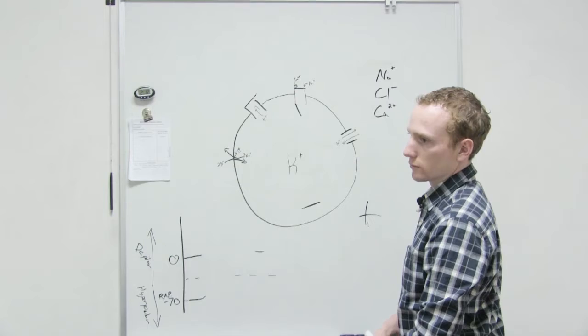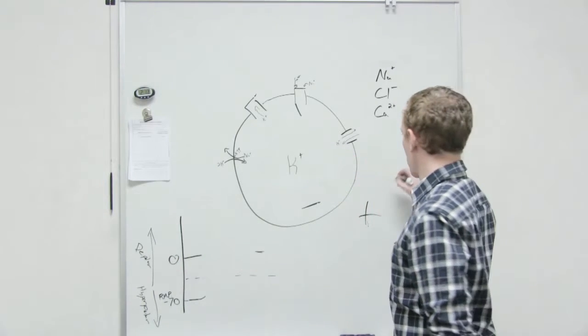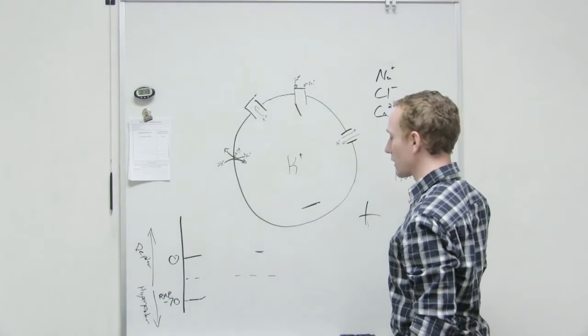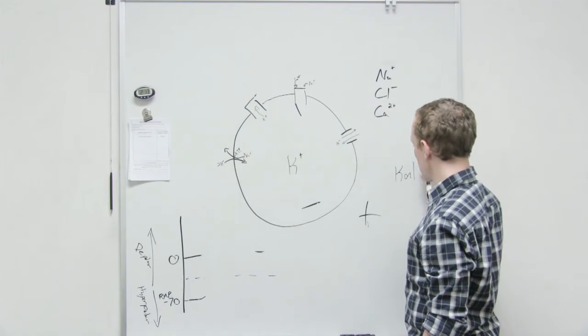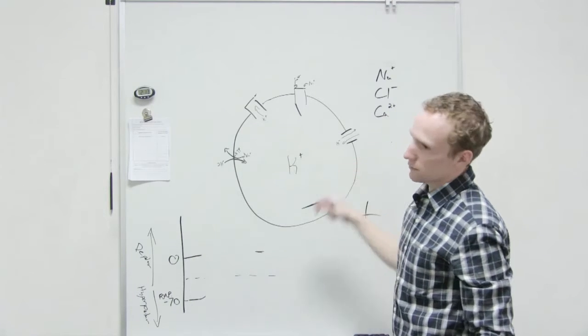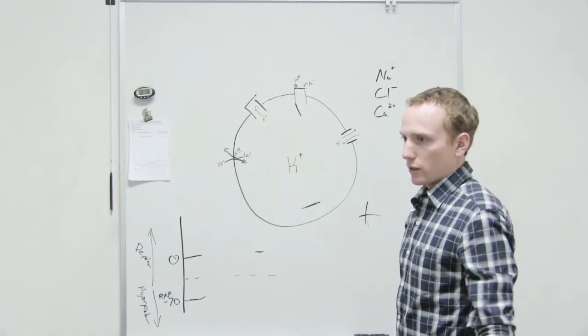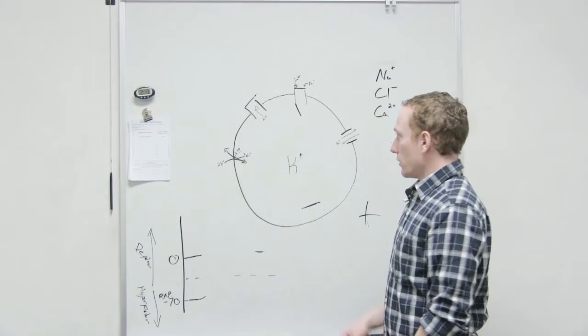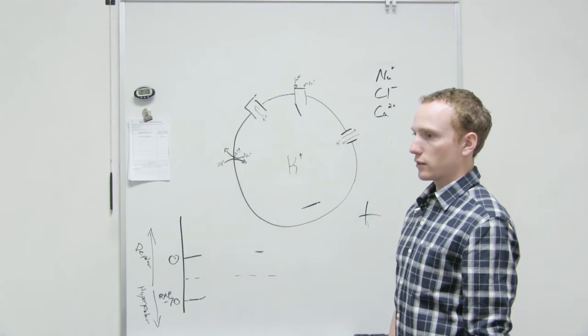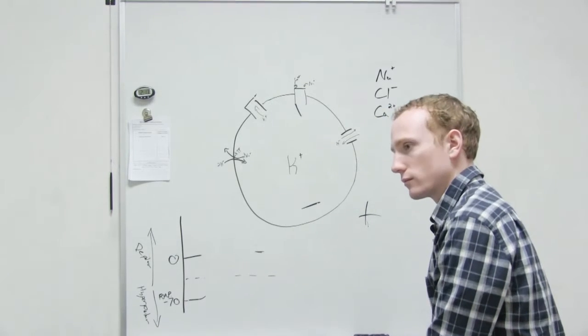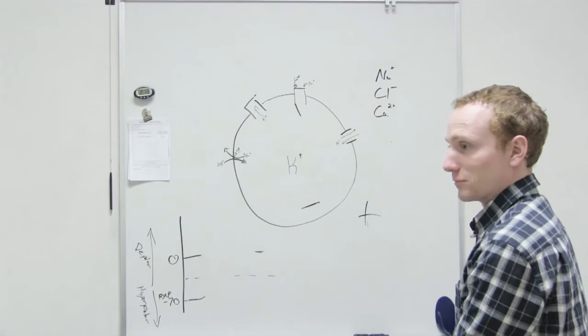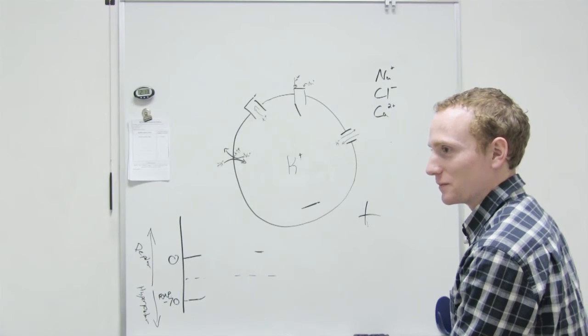Hypokalemia - less potassium, less potassium where? In the blood. So how does this affect it? Want to go out more or less? More. So more or less positive inside the cell? Less. So what is the overall result? It's going to go down, hyperpolarize. And that's what it does.